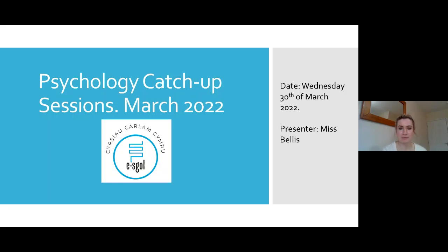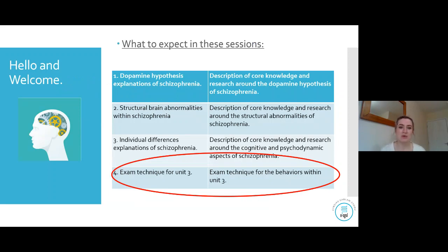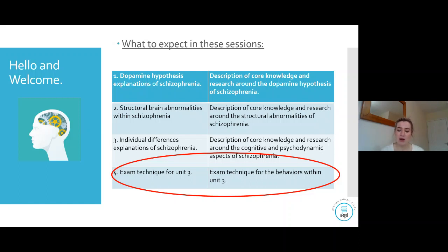So what we've looked at already: we have looked at the dopamine hypothesis and how that explains schizophrenia. We've also looked at structural abnormalities — both of our biological explanations. Then last week we looked at the individual differences explanations of schizophrenia. Today we are hoping to combine all of that and go through some exam technique for this unit.